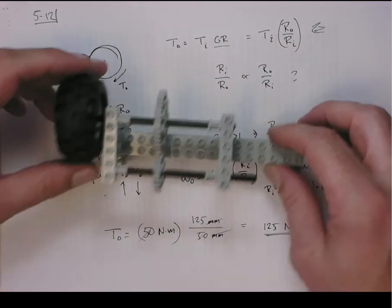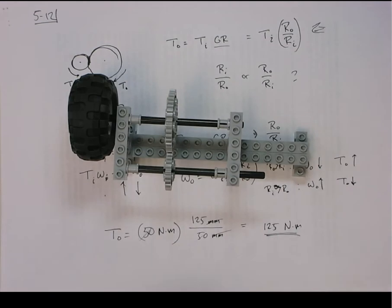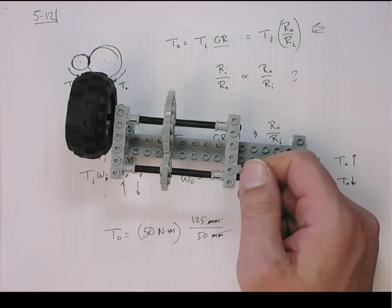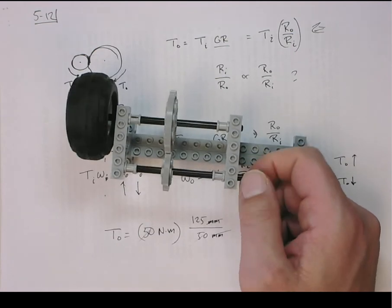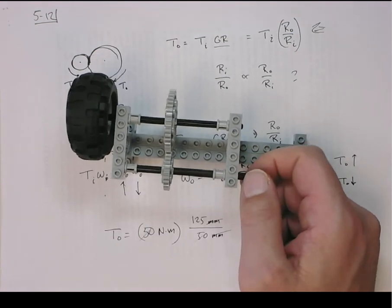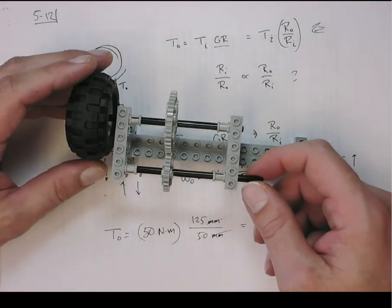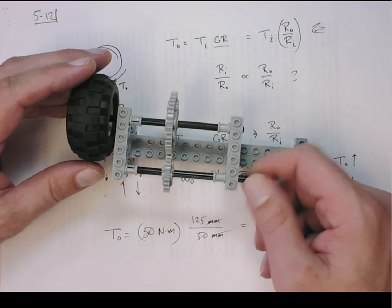By virtue of my children's LEGO toys, I've made a mock-up of this 5.12 problem. So here's the input shaft, my finger is the motor, and obviously what they want to know is the torque needed to make this problem run in equilibrium.